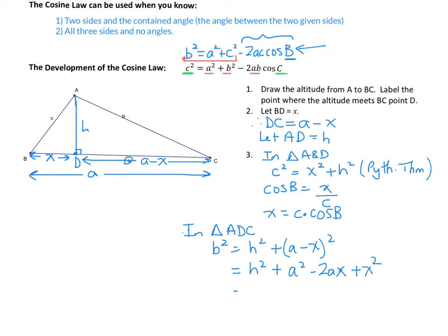I'm going to rearrange how this is written to start making it look like the cosine law written above. So: B squared equals A squared, plus X squared plus H squared, minus 2AX.